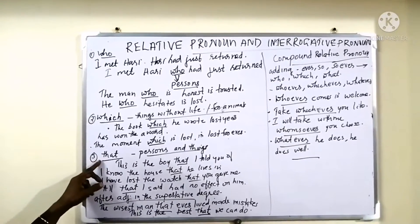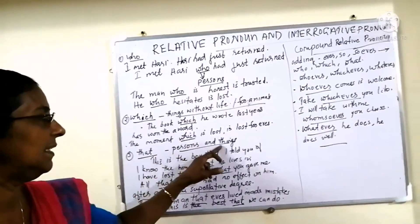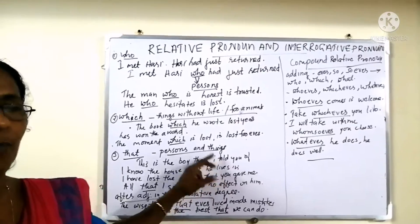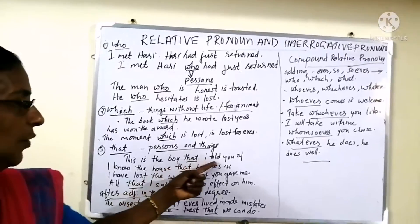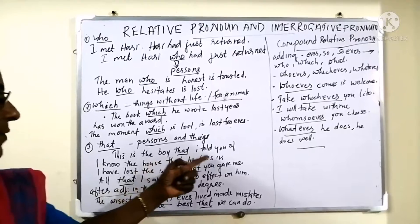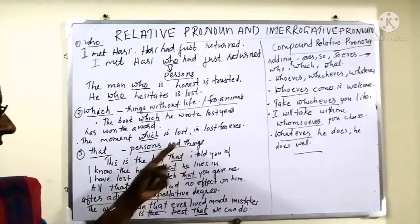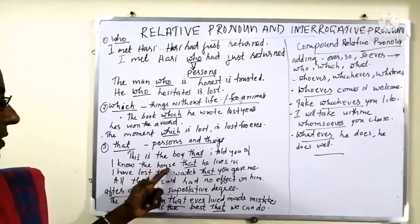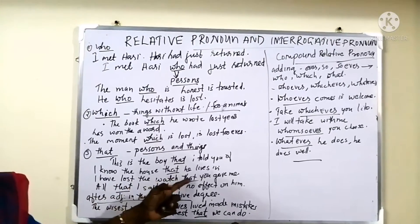The third relative pronoun is 'that,' and 'that' is used for both persons and things. For example: This is the boy that I told you of. I know the house that he lives in. 'Boy' is a person and 'house' is a thing. Another example: I have lost the watch that you gave me.